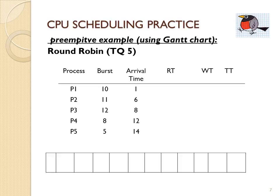We have five processes with staggered arrival times, and we're doing round-robin with a time quantum of 5. At time 0, none of the processes have arrived yet, so the CPU will be idle for one time unit. At time 1, P1 arrives, and we give it five time units on the CPU until time 6, at which time it has completed its CPU burst with five time units remaining.